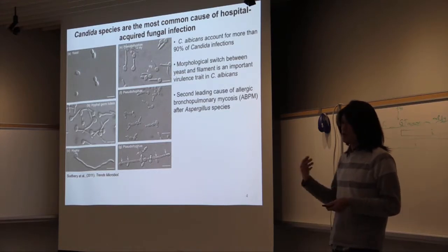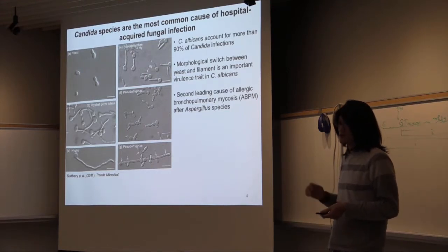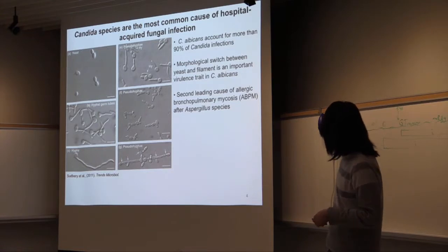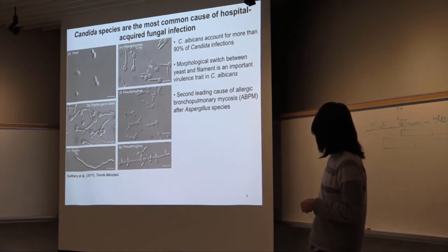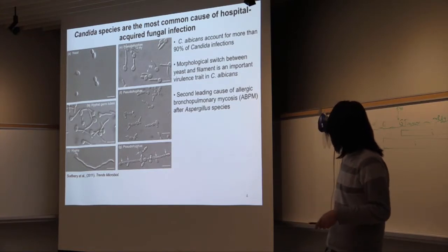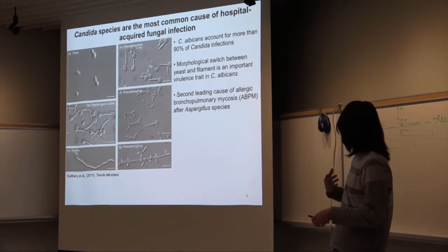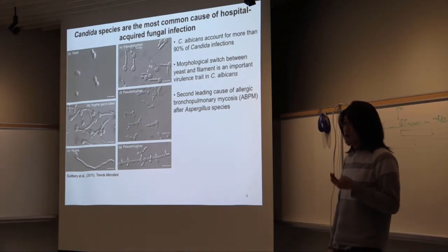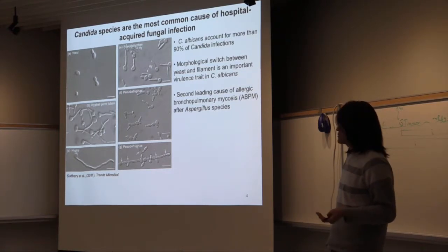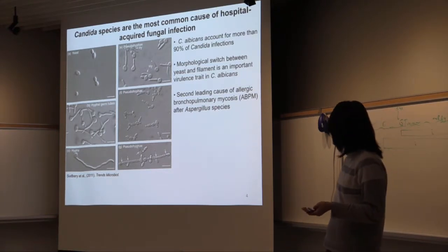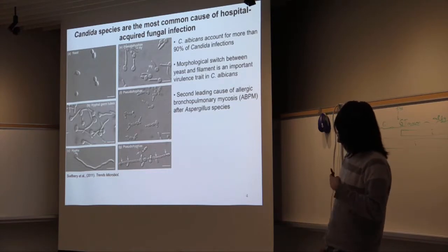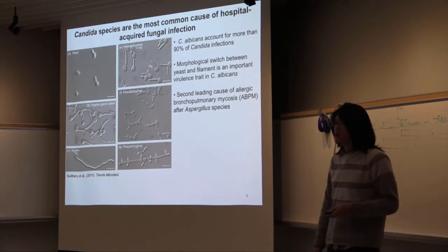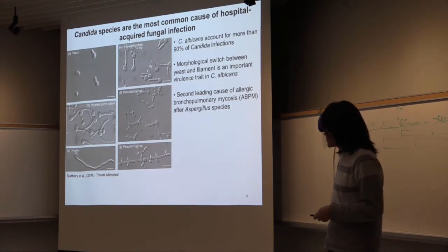Mutants that are locked in either state and cannot respond to environmental cues are thought to be avirulent in models such as the bloodstream infection model. Furthermore, Candida albicans is the second main cause of allergic bronchopulmonary mycosis after Aspergillus, which is even more interesting in the context of cystic fibrosis.